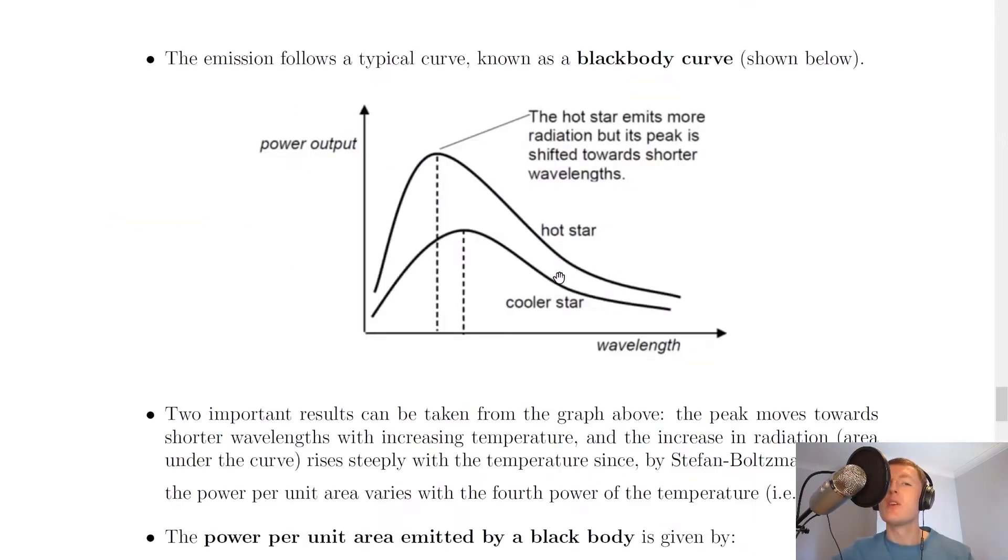Going back to the notes and looking at our picture again, we've got our power output on the y-axis or intensity of the star against wavelength on the x-axis. The first curve shows a cooler star which is lower down, i.e. smaller area under the graph. Then for a hot star, we've got a larger area under the graph and the peak has been shifted towards the lower end of the wavelength spectrum. So the hot star emits more radiation, but its peak is shifted towards shorter wavelengths.